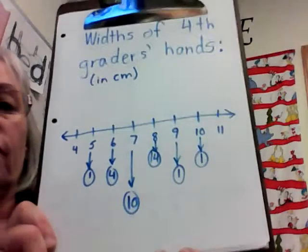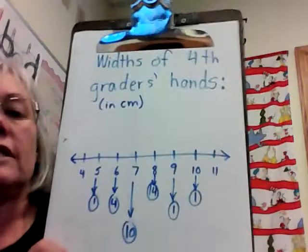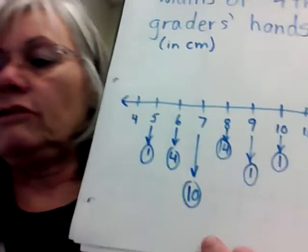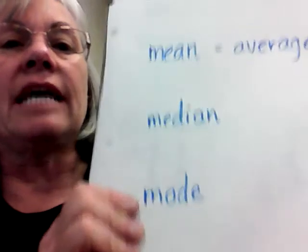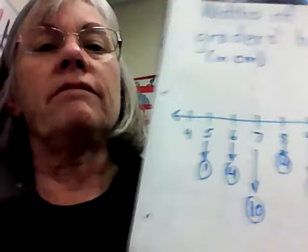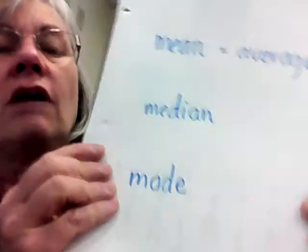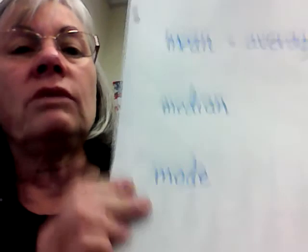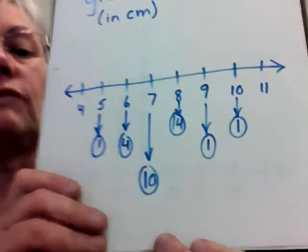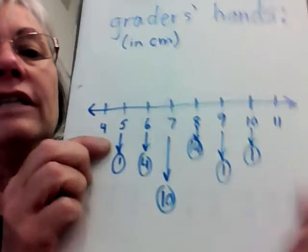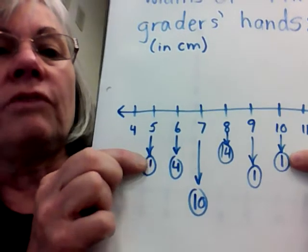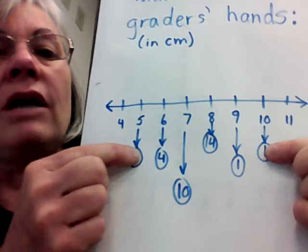You might like to see the numbers again in order to make your line plot. Now that you've had a chance to make your line plot, we'll do the median first. The median is another word for the middle of all the possible answers that were collected.